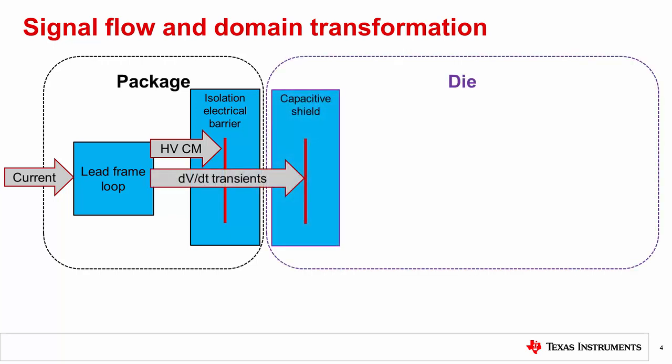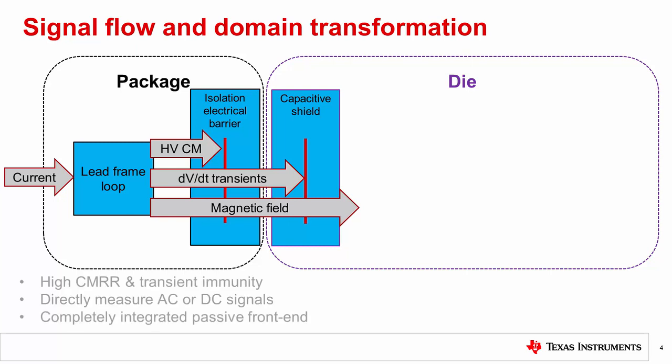There can also be significant voltage transients if the input voltage waveform has some switching in it, like a PWM signal. A capacitive shield is integrated into the sensor die assembled above the lead frame loop. This capacitive shield stops the high dV/dt transients from passing into the signal chain and output signal. The result is a magnetic field signal void of electrical coupling between the lead frame and the sensor IC. This results in excellent immunity to both common mode changes as well as voltage transients, enabling direct measurement of DC or AC signals.